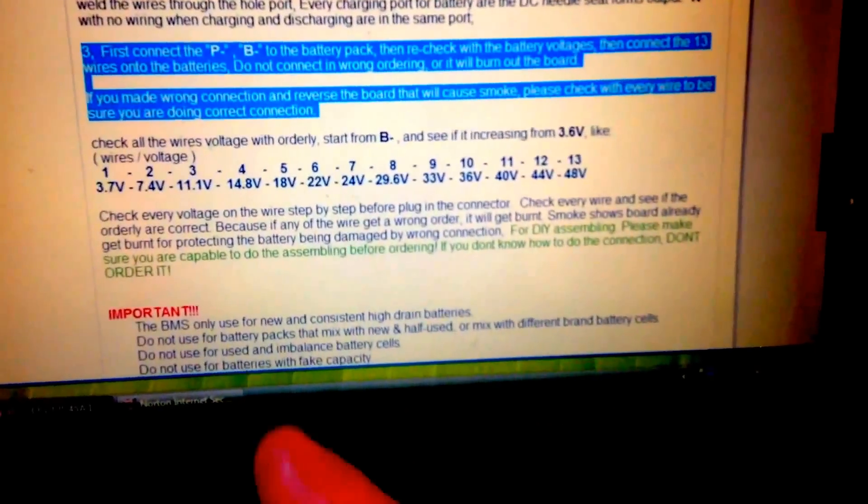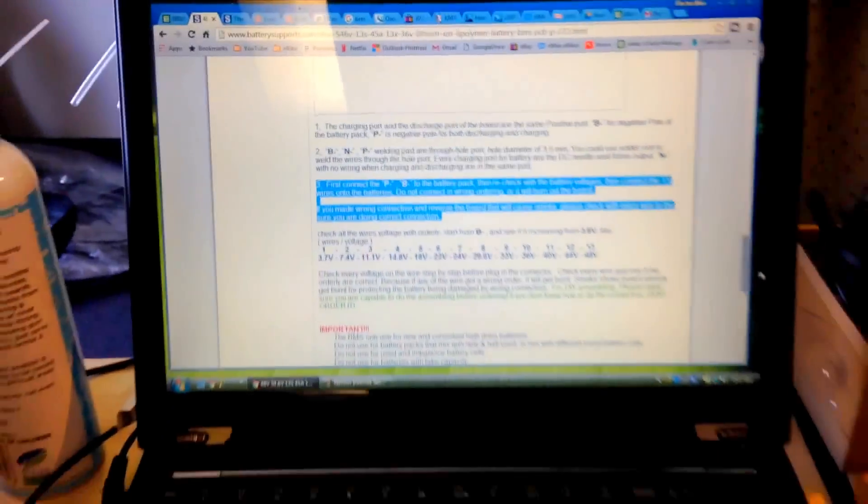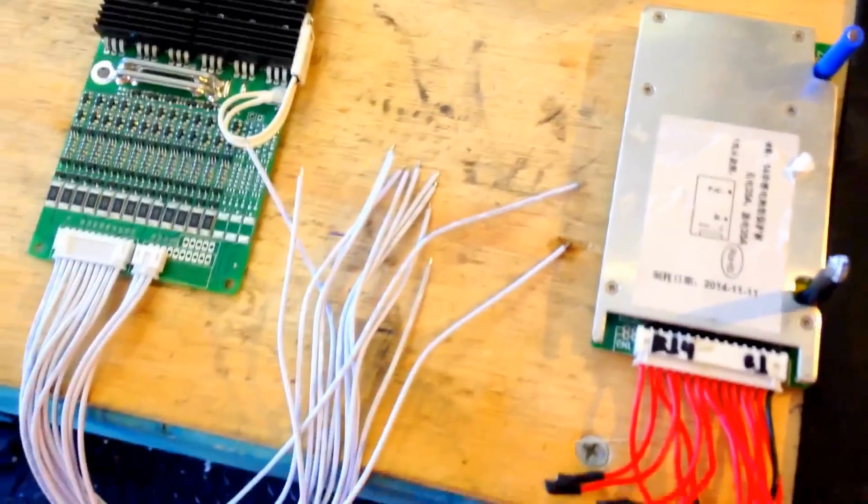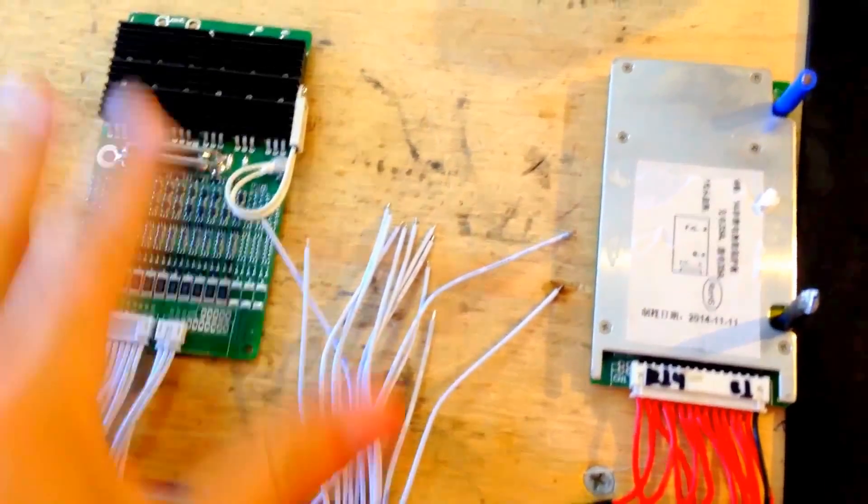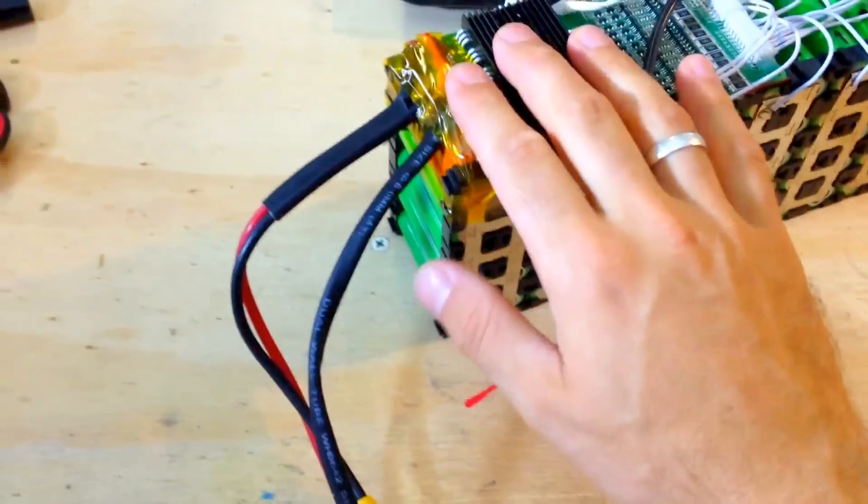If you make the wrong connection, it causes smoke and all that. See, it's very clear, but most of the BMS sellers won't give all this information. This is very important when you're doing the wiring - that's the proper order to do these things.